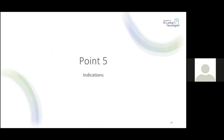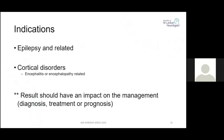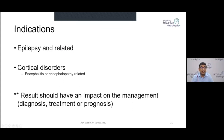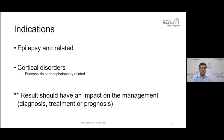There are basically two groups of indications for EEG: number one, epilepsy and related conditions; number two, cortical disorders such as encephalitis and encephalopathies. One should not do an EEG or any other investigation just because it is available — the result should at least be likely to be helpful in making the diagnosis, deciding on management, modifying management, or prognostication.